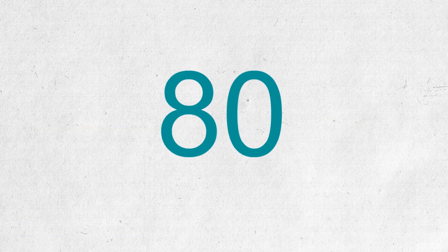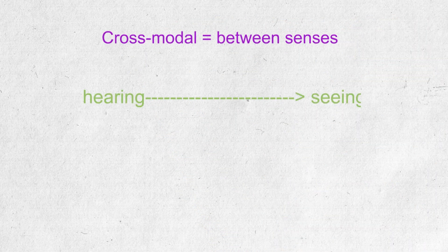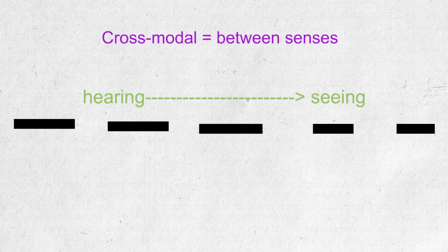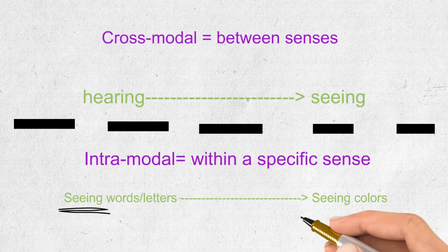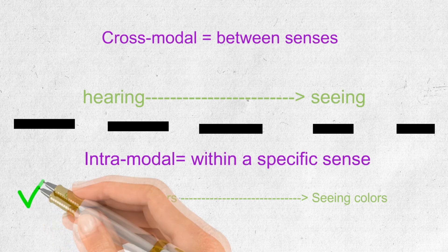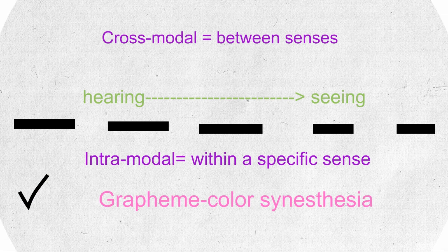80 types of synesthesia have been reported up to now. Some of them being cross-modal, which means between senses, like when hearing causes seeing, and some being intra-modal, which means within a specific sense, like when seeing a letter or a word causes you to see a color. In fact, this one is called grapheme color synesthesia, and is one of the most common types.